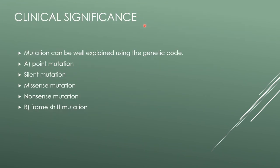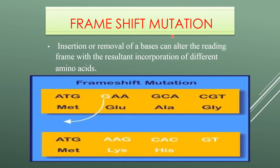Clinical significance of genetic code: mutations can be well explained using genetic codes. There can be point mutations or frameshift mutations. In frameshift mutation, insertion or removal of a base can alter the reading frame, resulting in the incorporation of different amino acids — this is called a frameshift mutation.